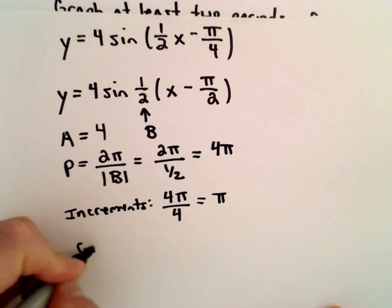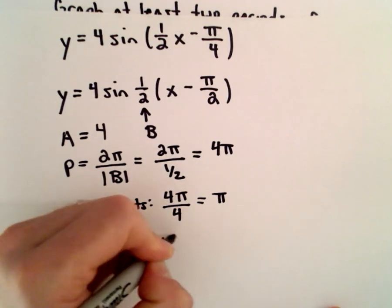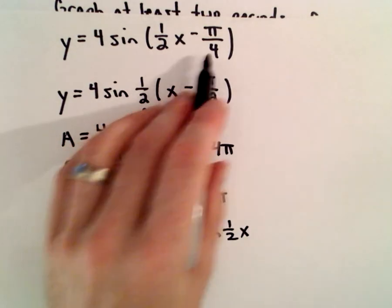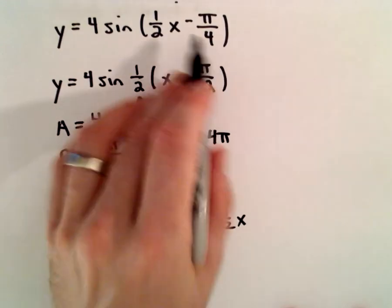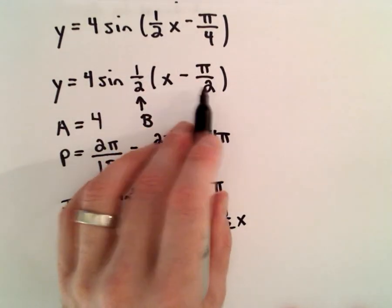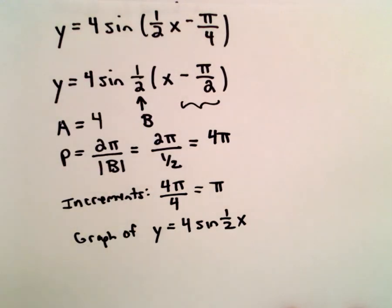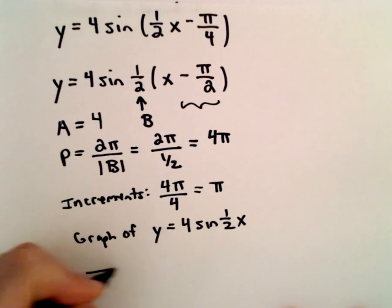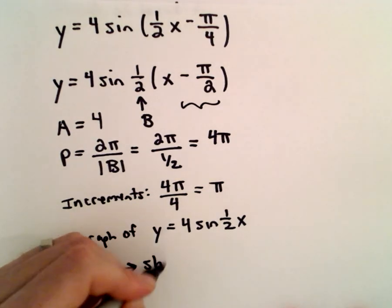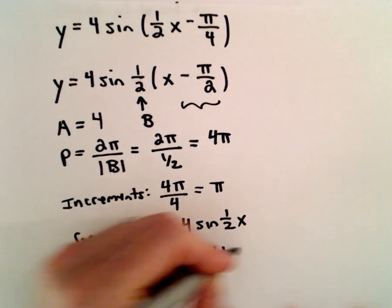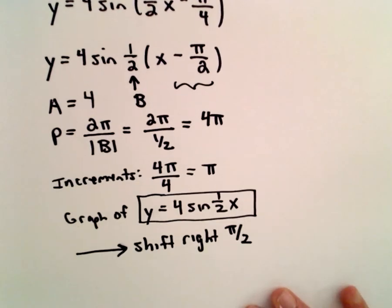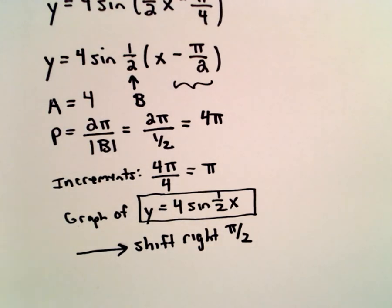If we think about the graph of 4 times sine of 1 half x, if we compare the new graph that we're going to come up with, we've got this negative pi over 2 inside the parentheses. This tells us the phase shift, or the horizontal shift. And I see a negative pi over 2. It's going to shift it in the positive direction. It's going to shift it to the right pi over 2 units. So the first thing I'm going to do is graph y equals 4 times sine of 1 half x, and then I'm just going to shift it to the right, pi over 2 units.